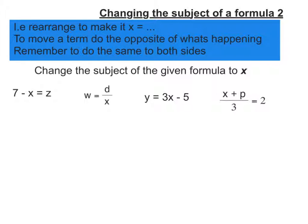In this video we're going to change the subject. This time we're going to have to do more than one line of working. So the first one, 7 minus x equals z.